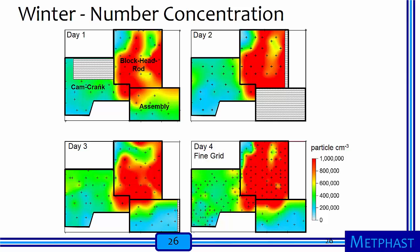Number concentrations in blue are relatively low, approximately 50,000 to 100,000 particles per centimeter cubed. For reference, typical background concentrations in most homes or offices are approximately 10,000 particles per centimeter cubed. Concentrations in red are high, approximately 1 million particles per centimeter cubed. These hazard maps help us understand that there is low temporal variability in this facility from day to day, and that concentrations are highly variable between, but not within, specific areas of the plant.